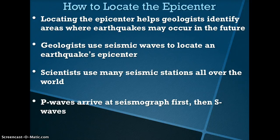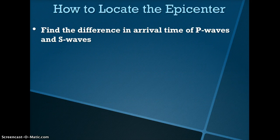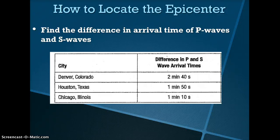Remember, P waves arrive at seismographs first, then S waves. The first step in finding an epicenter is to find the difference in arrival times of P waves and S waves. Sometimes the difference in arrival times may be given to you. In this data table, the difference in arrival times was given.